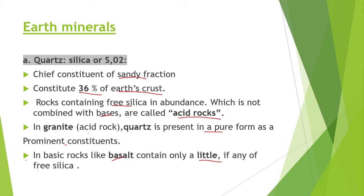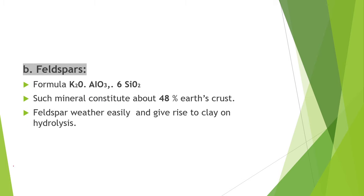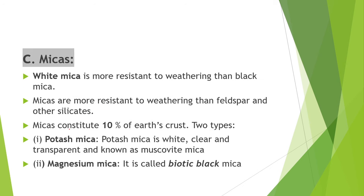In basic rock like basalt, quartz is present in very little quantity. Second is feldspar. Its formula is K₂O·Al₂O₃·6SiO₂. This mineral constitutes about 48% of the earth's crust. Feldspar weathers easily and gives rise to clay on hydrolysis. So, quartz is present in sandy fraction soil, and feldspar is present in clay soil.